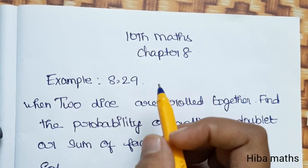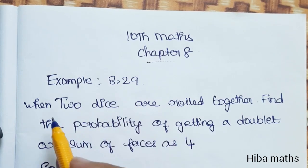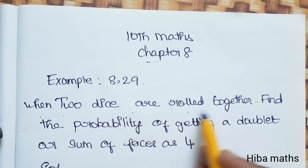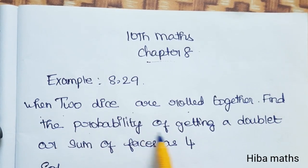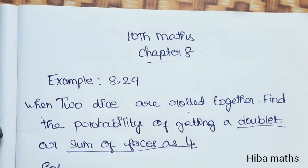Hello students, welcome to Hibamaks. 10th standard mathematics, Chapter 8, Example 8.29. When two dice are rolled together, find the probability of getting a doublet or sum of faces as 4.